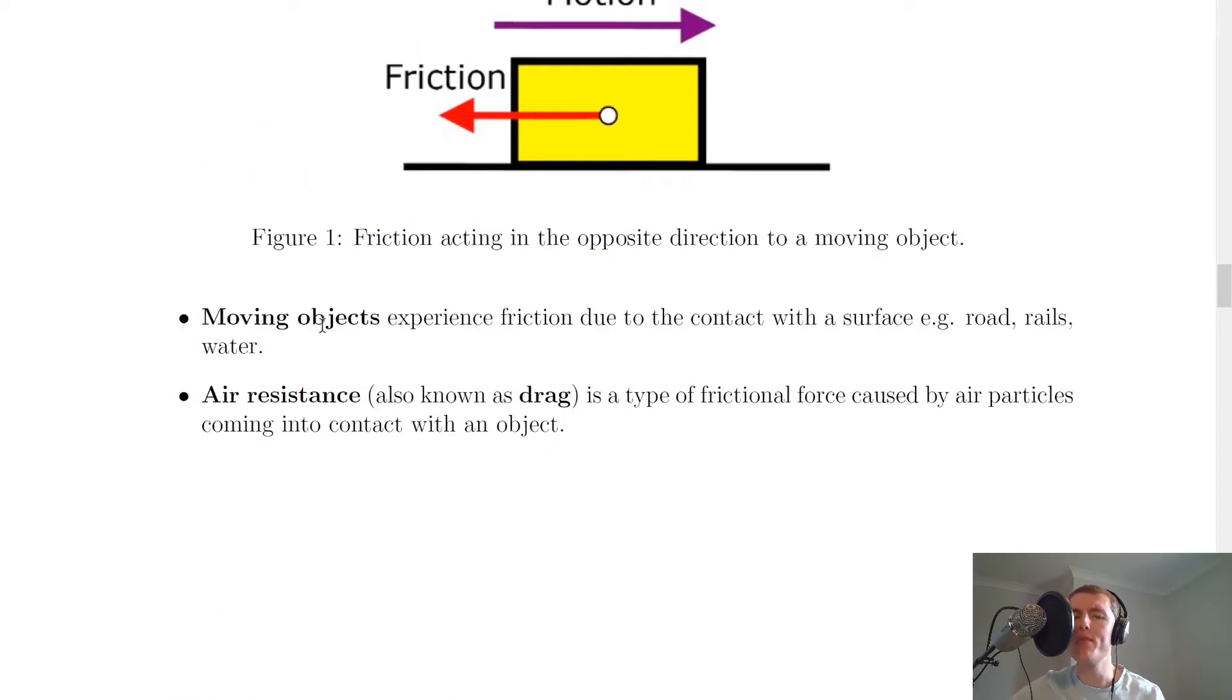It then says here that moving objects experience friction due to the contact with a surface, for example, the road, rails, or water. So if it's a train, it will have contact with the rails. If it's a boat, it will have contact with the water. And if it's any kind of land vehicle, then it will be the tires in contact with the road.